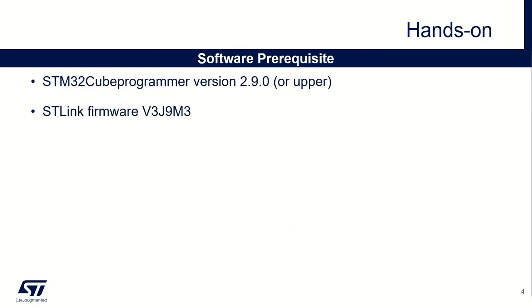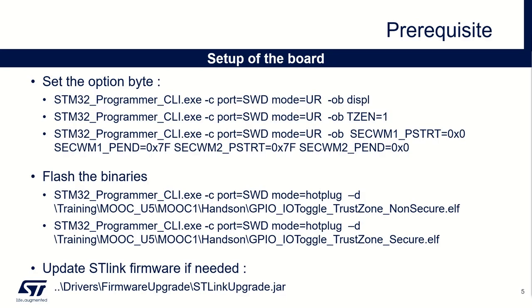During this hands-on, we will use STM32Cube Programmer version 2.9.0 in command line. Please ensure the ST-Link firmware of your Nucleo is up-to-date according to the Cube Programmer version used. We will use STM32Cube Programmer in command line. Here is a list of commands we will use to achieve our prerequisites: first we set option bytes — display them, set TrustZone to one, then the flash watermark, then the two commands to flash the non-secure and secure binaries. The last command launches the firmware upgrade of your ST-Link if needed.